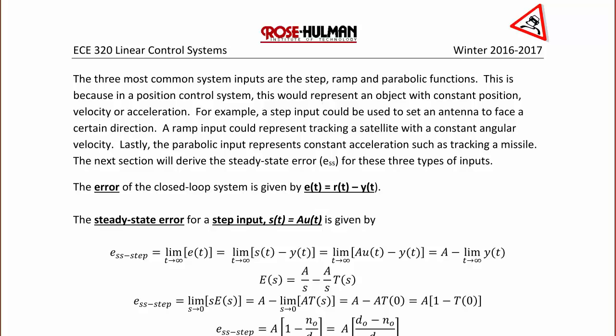The steady-state error for a step input s(t) = Au(t) would be given by the following. Notice that these equations were derived by using the final value theorem. The way that we draw a step input Au(t) would be a step function that's 0 up to time 0, and then it rises to an amplitude of A.